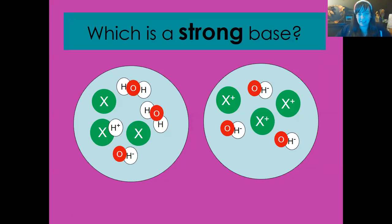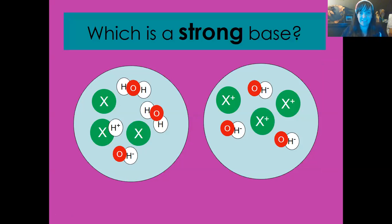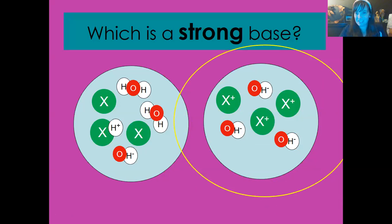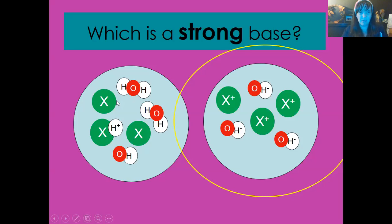Let's look at two diagrams and figure out which shows a strong base — you can count the number of hydroxide ions to help. That's right: here's the strong base — every single molecule broke apart. In the other one, some molecules stayed together, with mostly water remaining in solution.